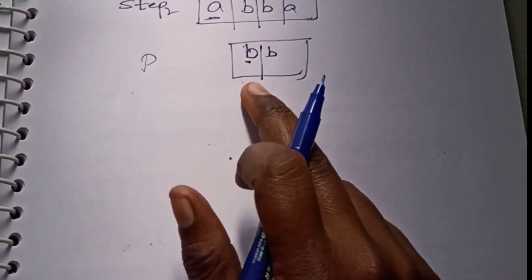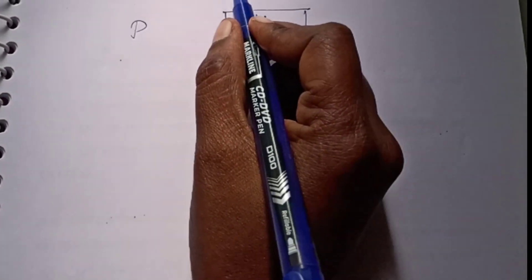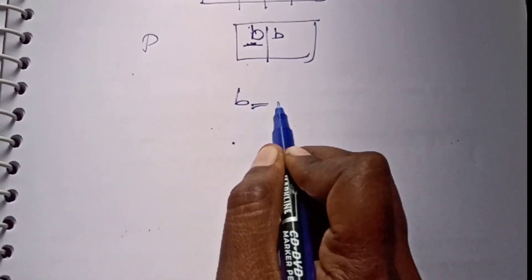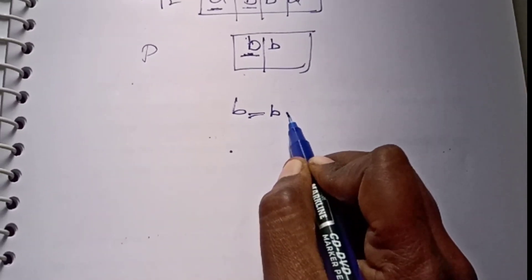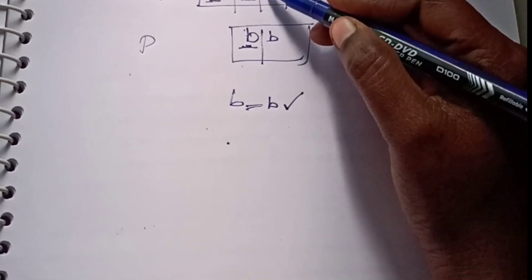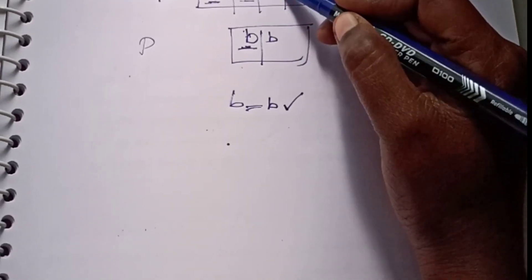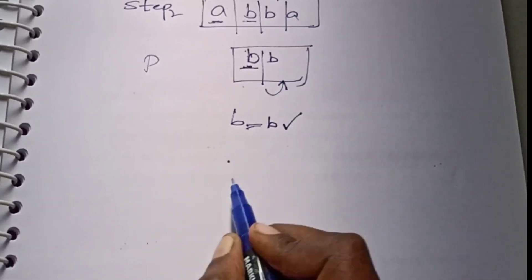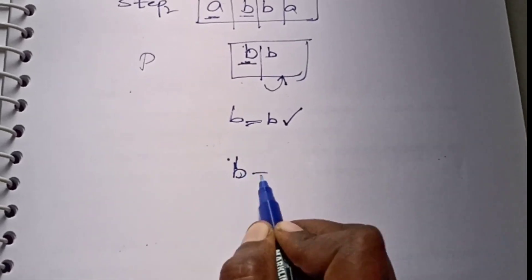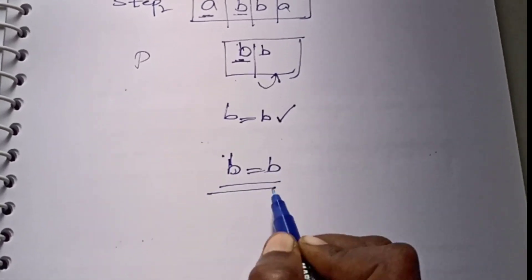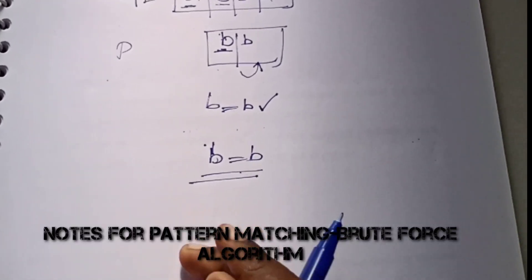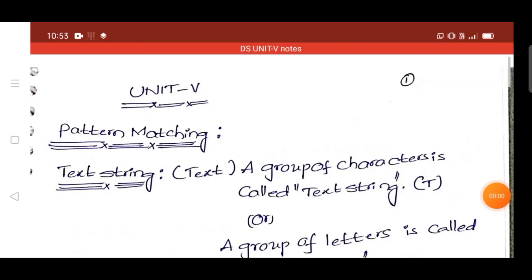Now we check: is B B equal to B B? It is matched. So we check the next position of this one with the next position of the pattern — that next position is also B B, so the pattern is matched. We stop the algorithm.